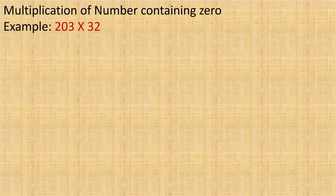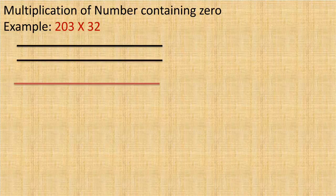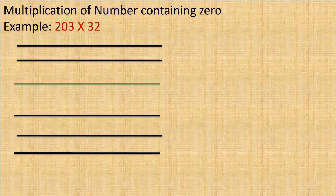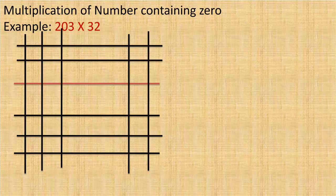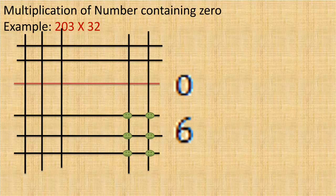Now we will see multiplication of numbers containing 0. Consider the example 203 multiplied by 32. For 203, we draw 2 horizontal lines, then for 0 we draw a line with a different color, and for 3 we draw 3 horizontal lines again. For 32, we draw 3 vertical lines, and leaving some space, 2 vertical lines. When counting intersections with the line of a different color, we put that intersection count as 0 and directly write 0.